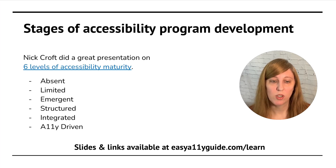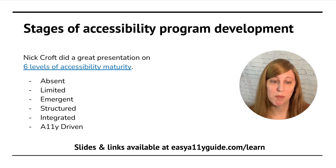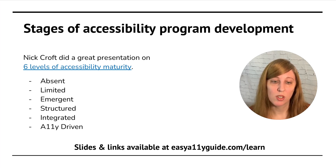There was a great presentation by Nick Croft at the WordPress Accessibility Meetup on the six different levels of accessibility maturity within organizations. We're going to apply those same six levels here.